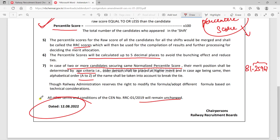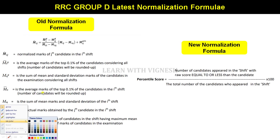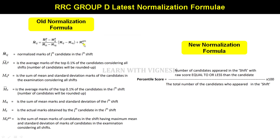Now, the percentile-based normalization complete details. So, this is the formula — the old normalization formula. This is the formula. How do you calculate this formula?